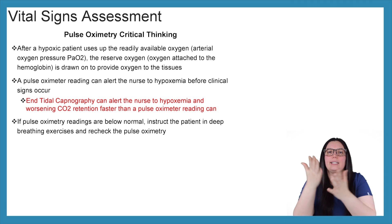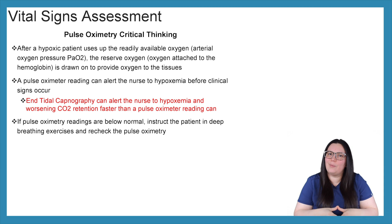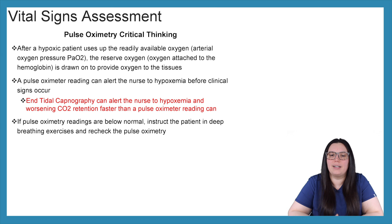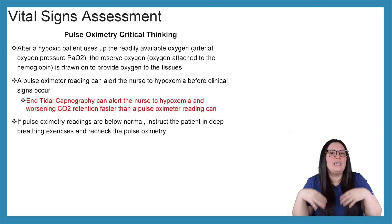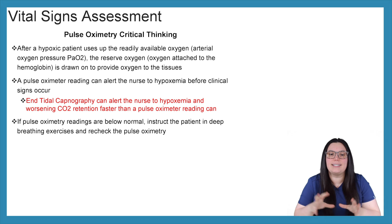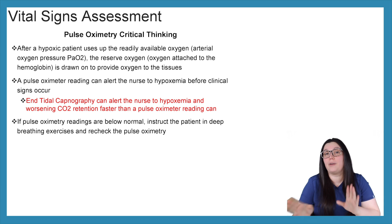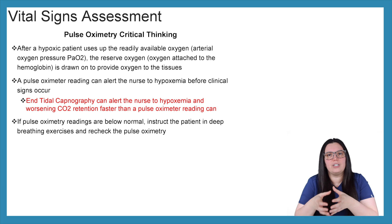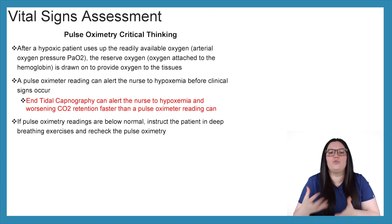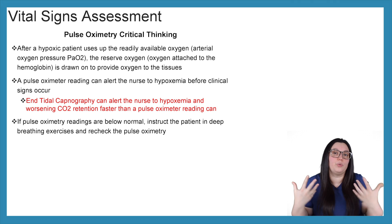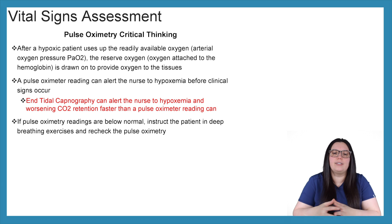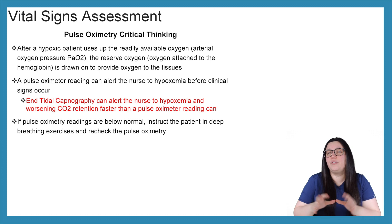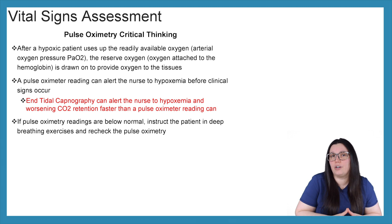Let's consider some critical thinking when it comes to pulse oximetry. After a hypoxic patient uses up the readily available oxygen in the system — that's the arterial oxygen pressure, our PaO2 — that reserve oxygen, the oxygen attached to our hemoglobin, is drawn upon to provide oxygen to our tissues. A pulse oximetry reading can alert the nurse to hypoxemia before clinical signs start to occur.